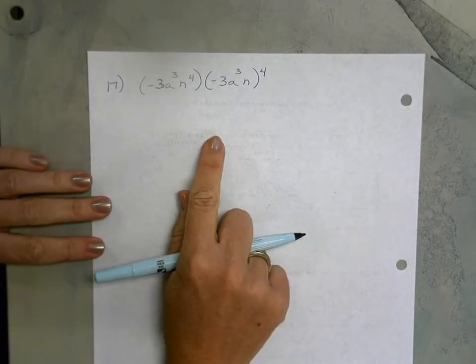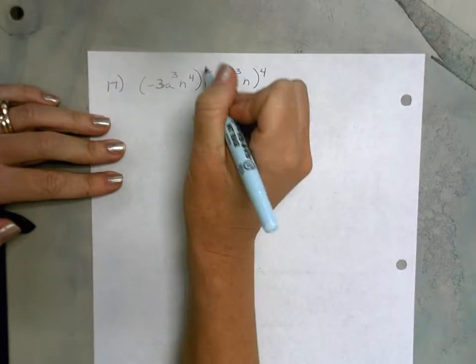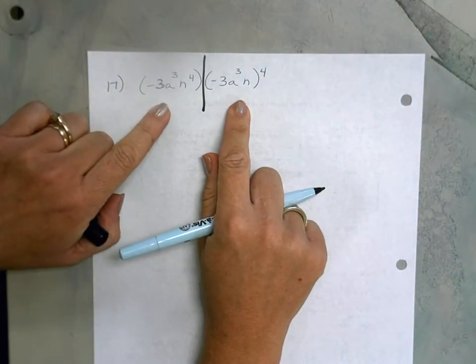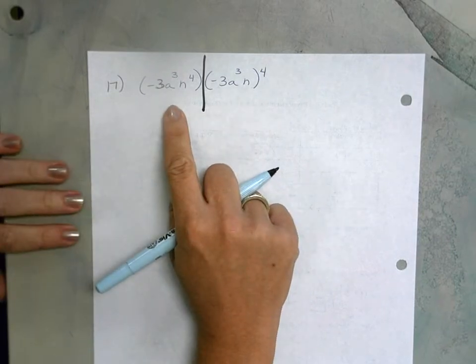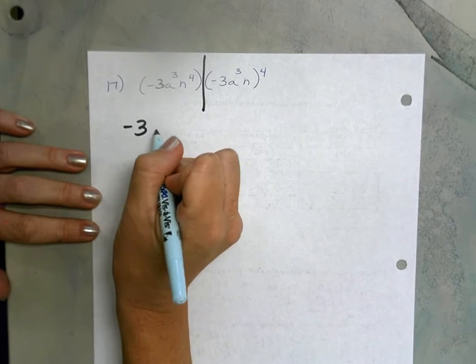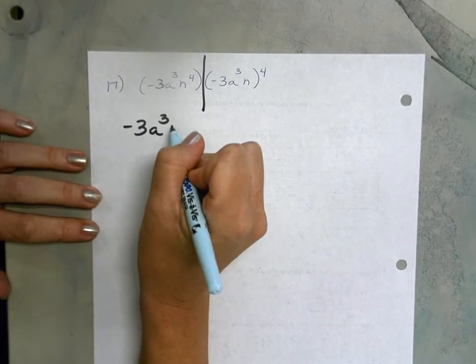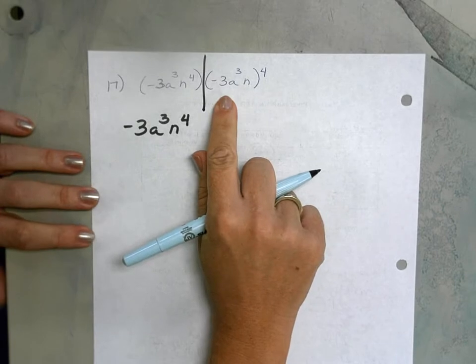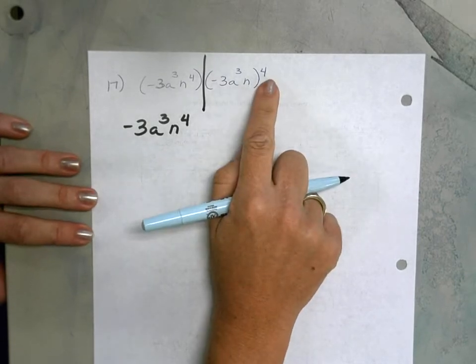So problem 17, I'm going to look at as two separate problems. That's that math practice 7 where we break problems into smaller steps. So my first problem here, I'm going to leave alone for now. I just have negative 3 times a to the 3rd times n to the 4th, and then I have a similar monomial, but the 4 is now on the outside of the parentheses.